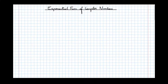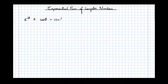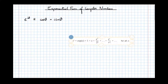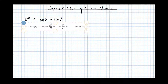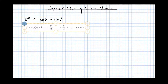In this video, we're going to have a look at the exponential form of complex numbers, and in particular, we're going to prove that e to the power of i theta is identical to cos theta plus i sine theta. To do that, we're going to have to use the Maclaurin expansion of e to the power of x, which I've taken from the formula booklet. We're going to use that to expand e to the power of i theta.